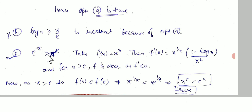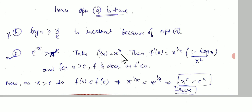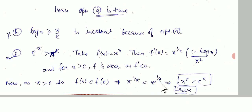For the third option: e^π is strictly greater than π^e. We define f(x) = x^(1/x), and its derivative is x^(1/x) · (1 − log x)/x². For x strictly greater than e, f is decreasing since f'(x) < 0. Since π > e, we have f(π) < f(e), which gives π^(1/π) < e^(1/e). Raising both sides to the power πe gives π^e < e^π. So this option is true.